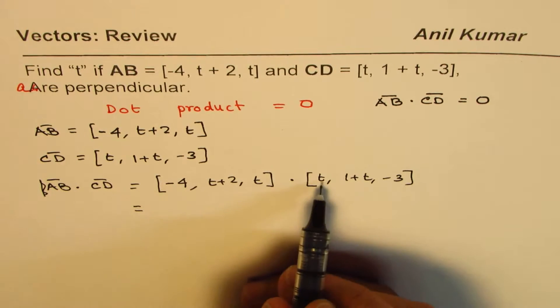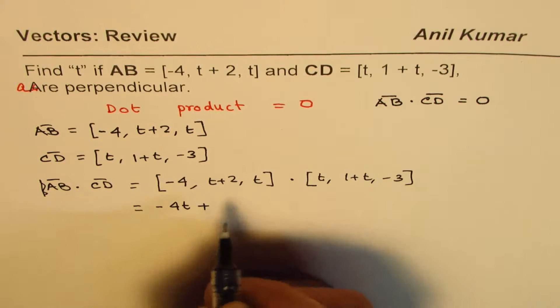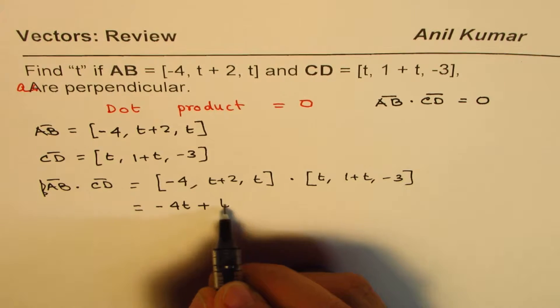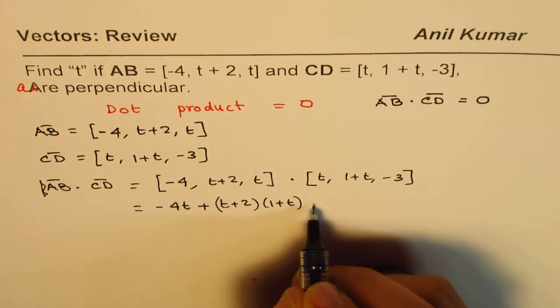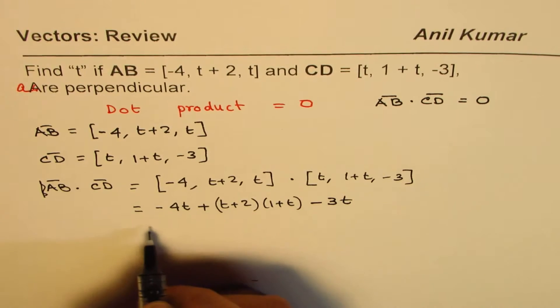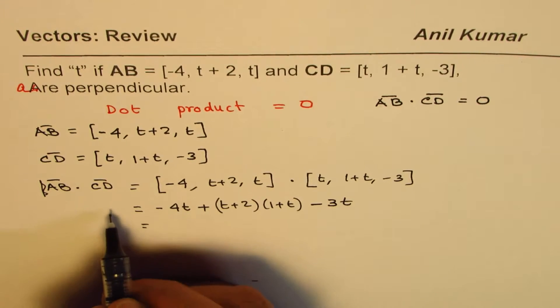Which is equal to minus 4 times t which is minus 4t, plus t plus 2 times 1 plus t, and then we have minus 3t. We will expand this and this dot product should be equal to 0.